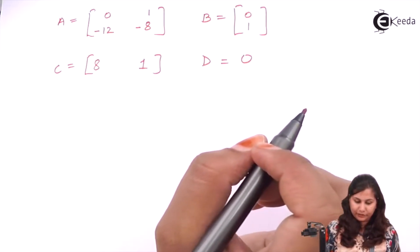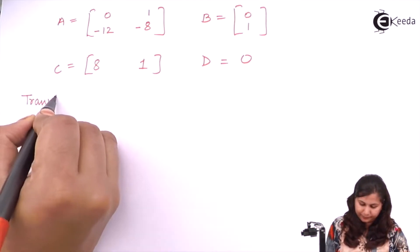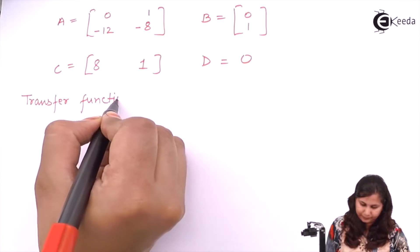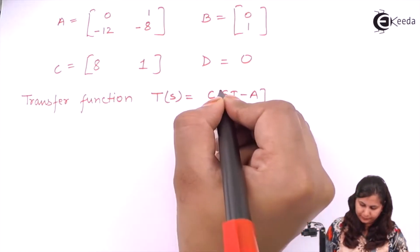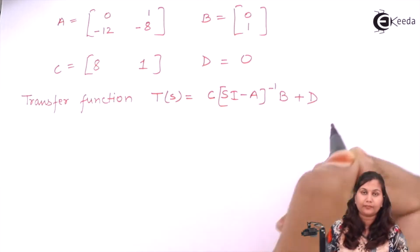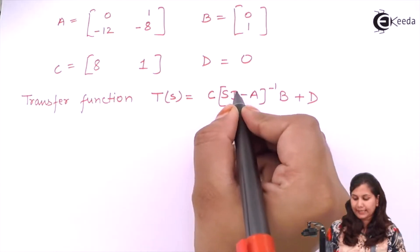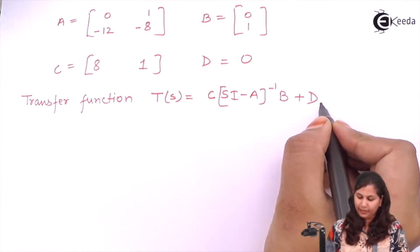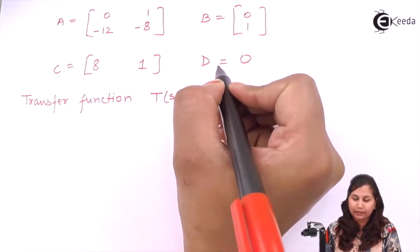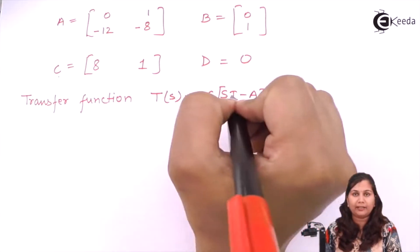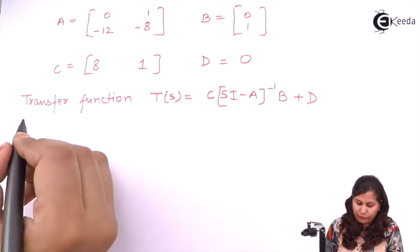Now we know that the transfer function is given by the formula: C times (sI minus A) inverse times B, plus D. We have the values of C, A, B, and D, so we can put in the values. We need to calculate (sI minus A) inverse.